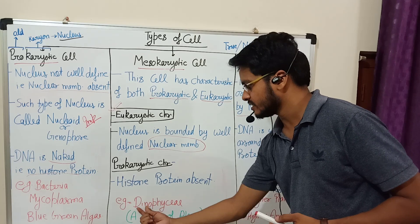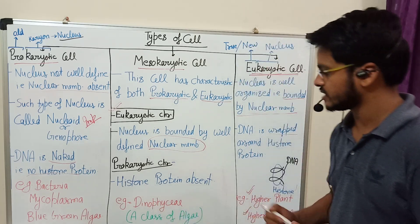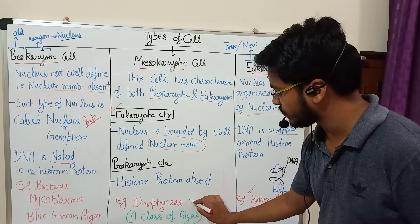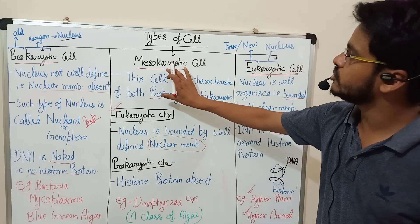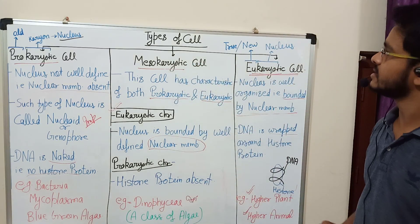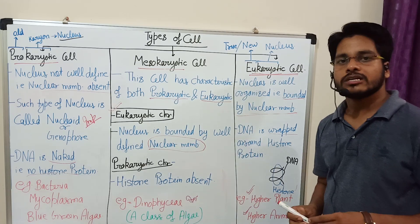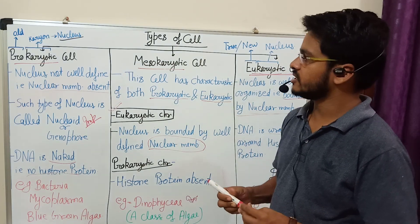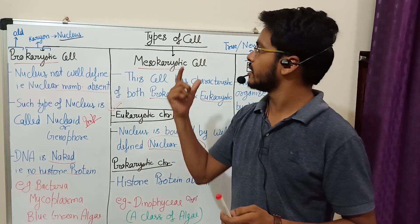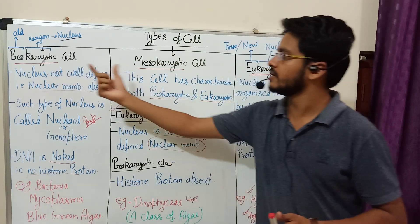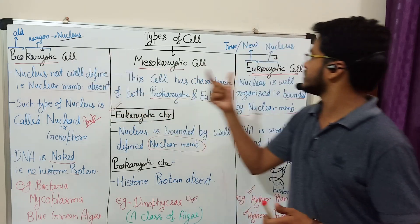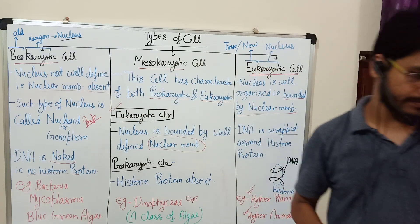So the cells of Dinophyceae are mesokaryotic cells. We will now discuss the differences between prokaryotic cells and eukaryotic cells.